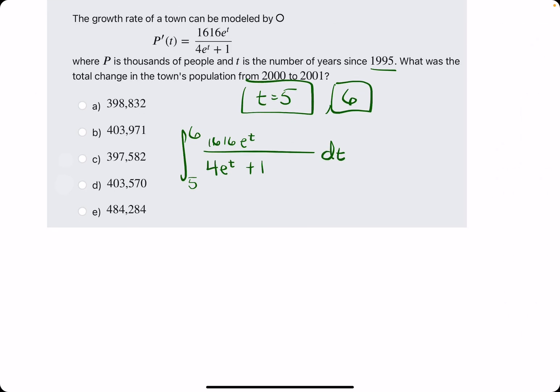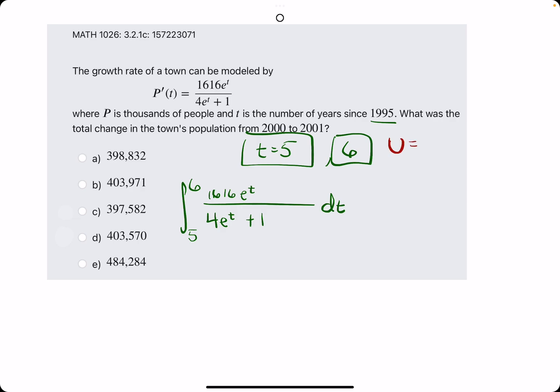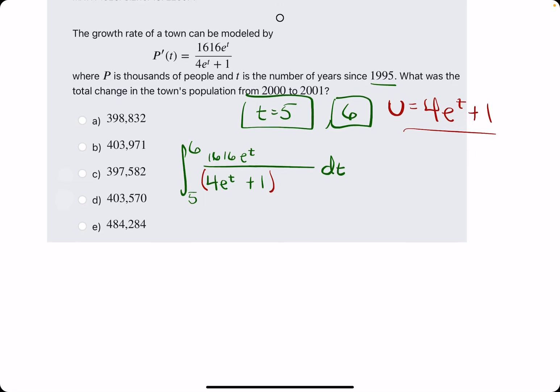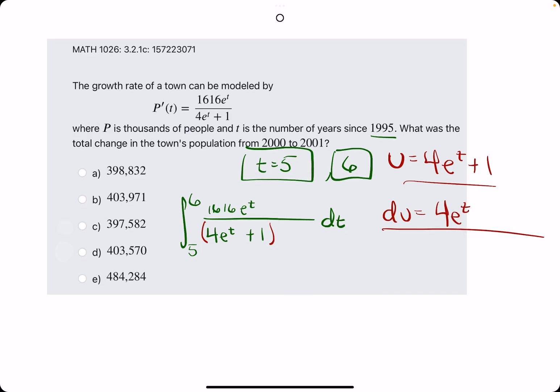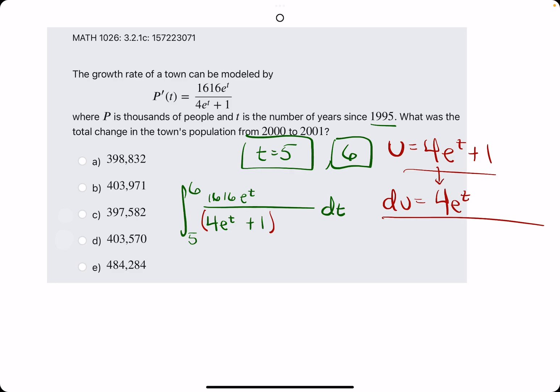We identify U. U is equal to, again, the denominator. I think it might be a safe bet in these. Don't quote me. But I think the denominator will always be your U in these problems. The derivative of E to the T is E to the T. And the 4 is just a coefficient. So it just comes along for the ride.